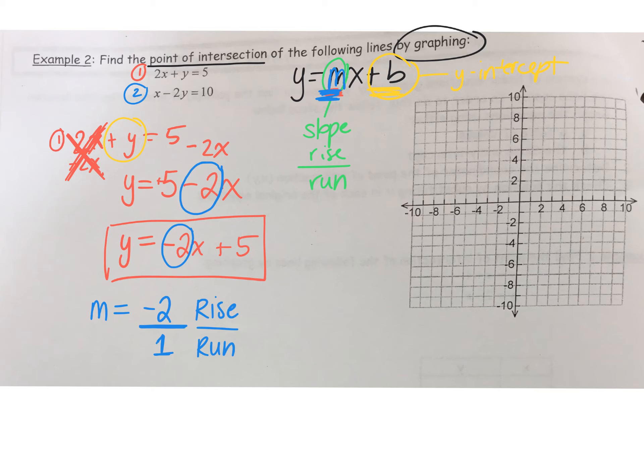Okay, so we have to figure out which part of this equation tells me what the y-intercept is. Remember, I said it's the term, it's the constant term, it's the number by itself. So what is the y-intercept? Yes. Positive 5. So I'm going to write b is equal to 5.